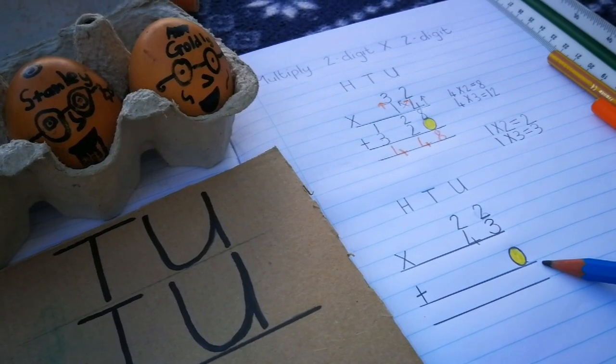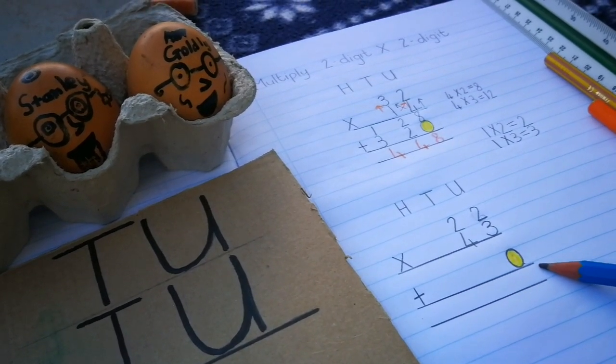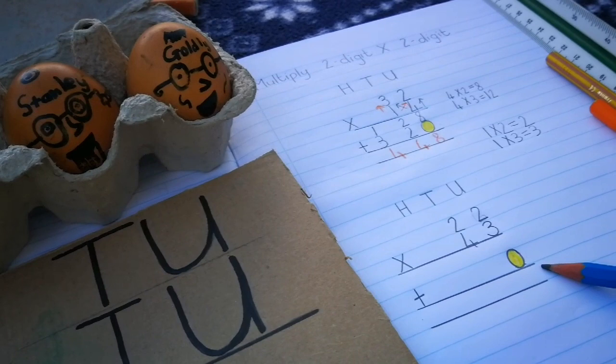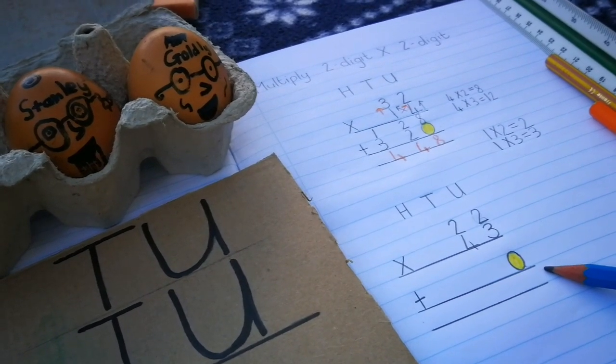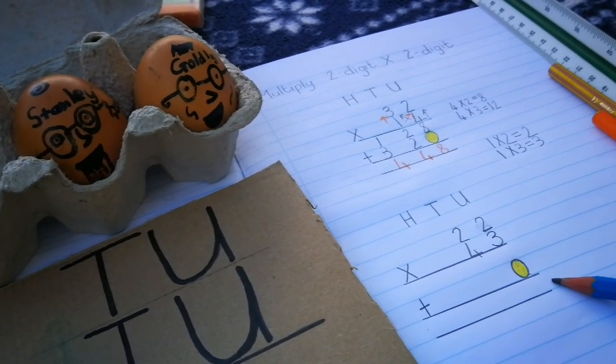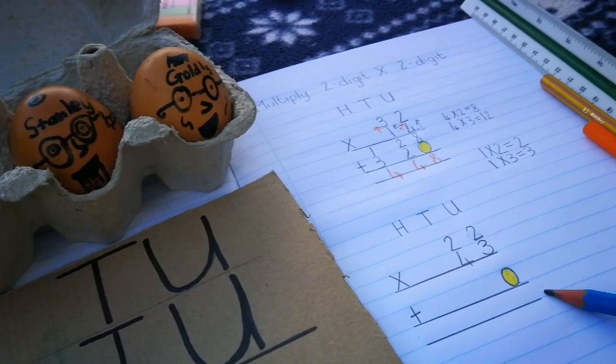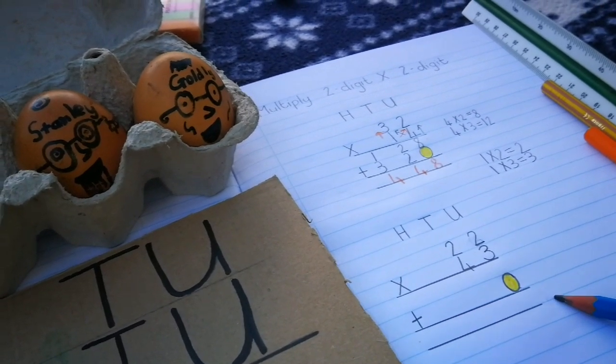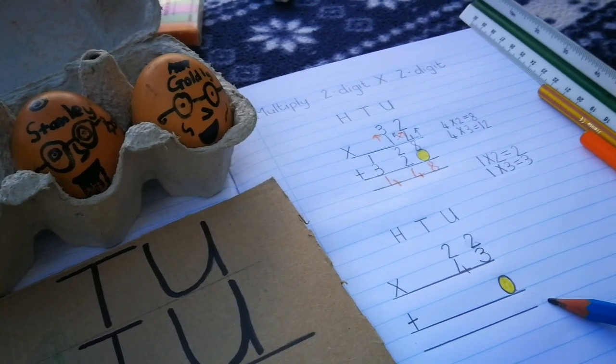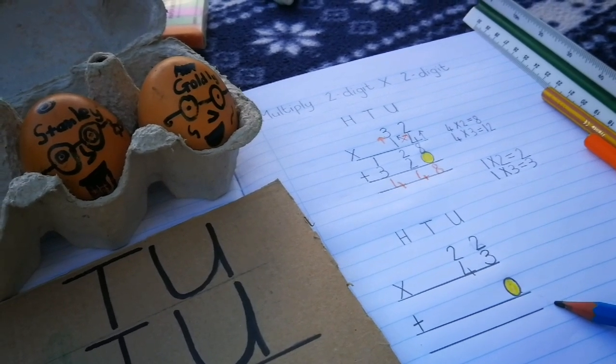This is how you multiply using the golden egg method. We've given you a problem, 22 times 43. See if you can use this method to get the answer. Remember to put down your golden egg. And then, once you've got the answer, please write it down in the comments below.